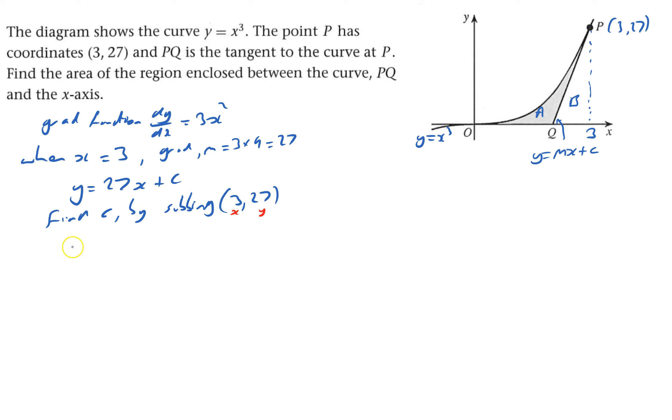27 equals 27 times 3 plus c, so c will equal minus 54.